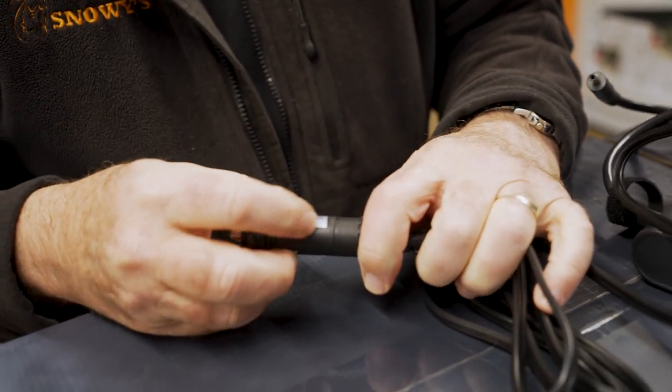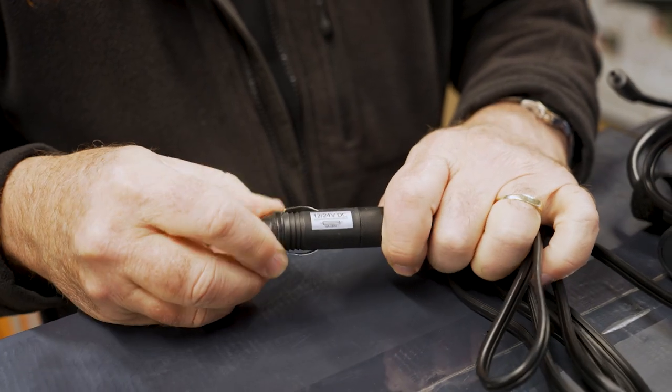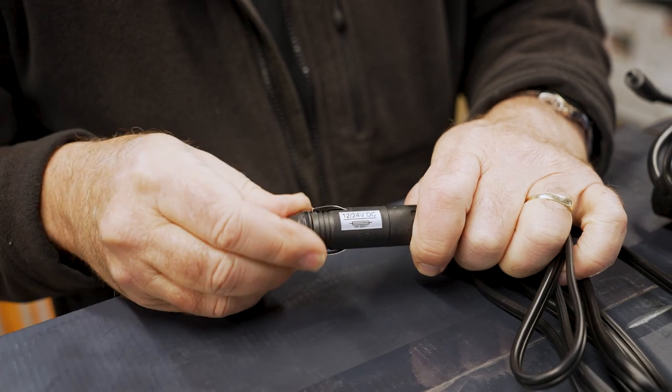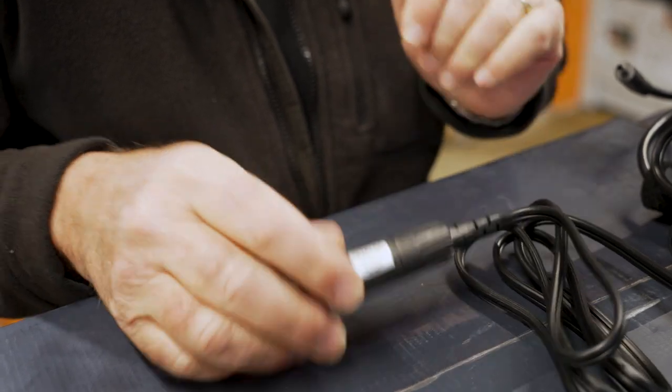Just remember there is a fuse inside here as well, as well as the other two. To change that fuse, you unscrew that end. I won't take it all off, but that comes out. The fuse comes out, and you can replace it and put it back in again, and you're underway again.